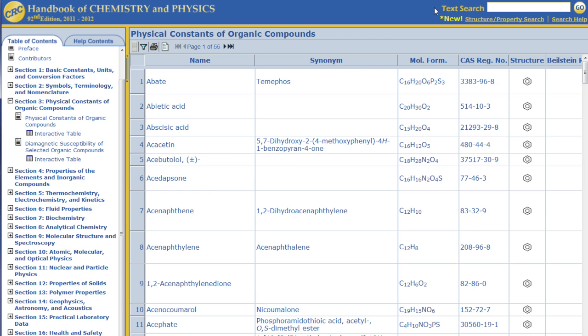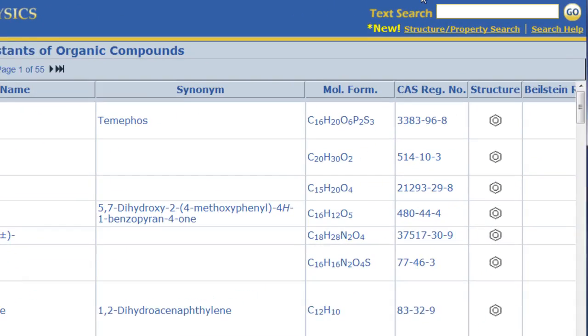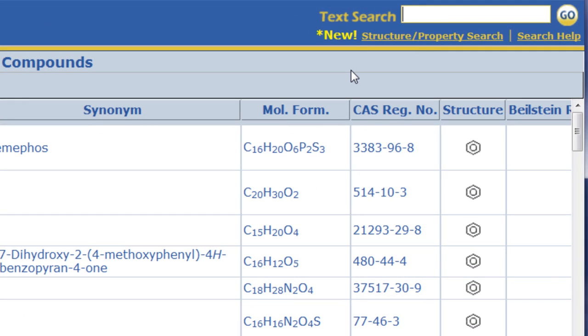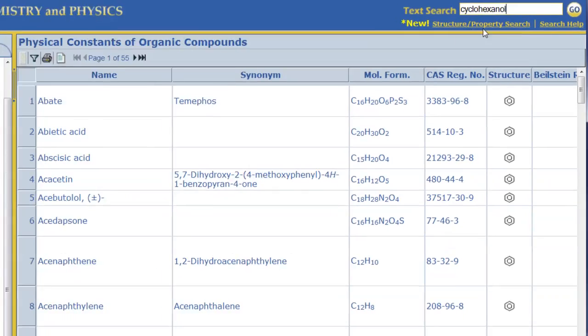A faster way to find information about just one substance is to use the text search option. The text search box is located in the top right-hand corner of every page. Click on the text search box, type in the name of the substance or a keyword, and then click go.